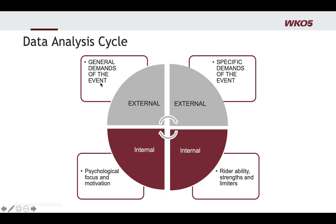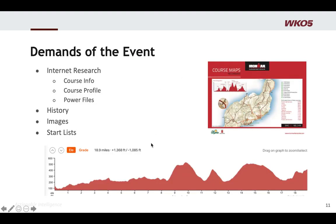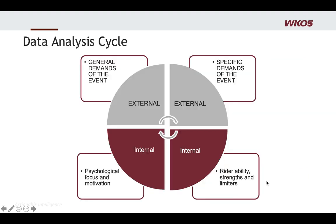First, I write the general demands of the event. For example, I'm here at the 2019 World's ITT course doing some pre-work with one of my athletes — I'll use that as an example. The general demands: it's 30K, flat into a rolling profile. That's the profile that was on this slide. It's got some fast sections and some technical sections. I have an estimated time we'd expect to finish. I start with those big general demands, just big picture.